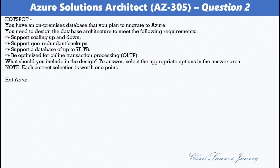Question 2. You have an on-premises database that you plan to migrate to Azure. You need to design a database architecture to meet the following requirements: support scaling up and down, support geo-redundant backups, support a database of up to 75 TB, and be optimized for online transaction processing (OLTP). What should you include in the design?